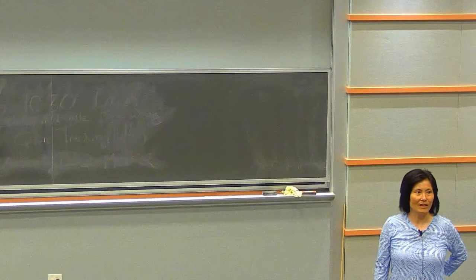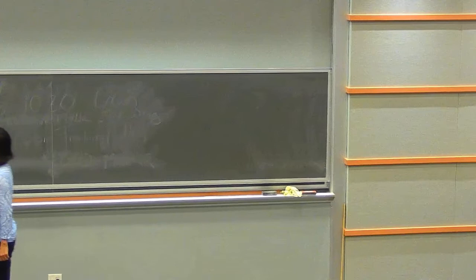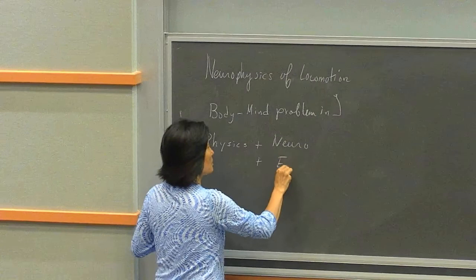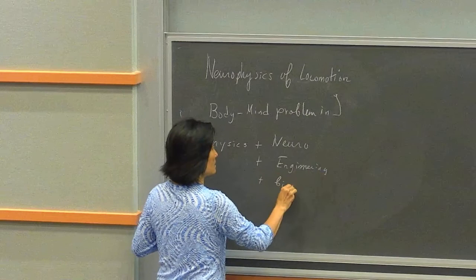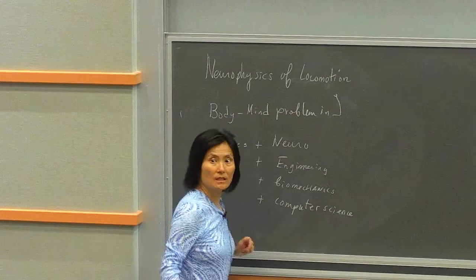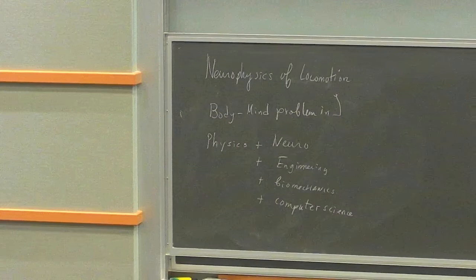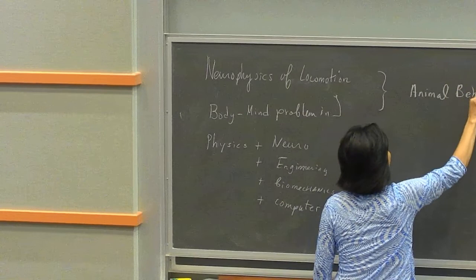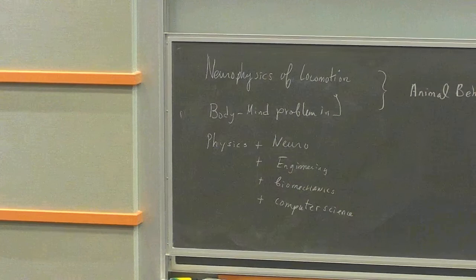We are, so why are we here, who are we? We're a bunch of, a mixture of physicists. So there's physics plus neural, naturally, and as well as engineering people and biomechanics. And I might also add, some people may come from computer science. So as you can see, it's a good mixture, and actually a big portion of participants are from neuroscience.